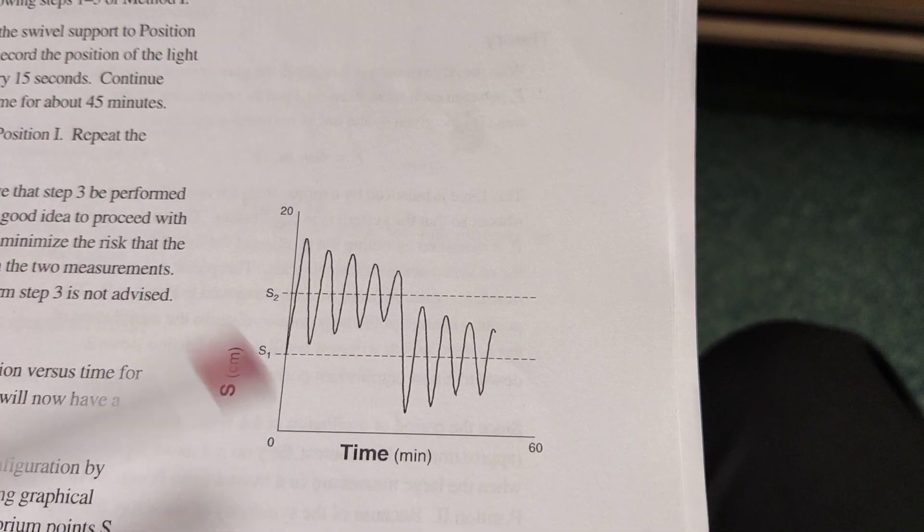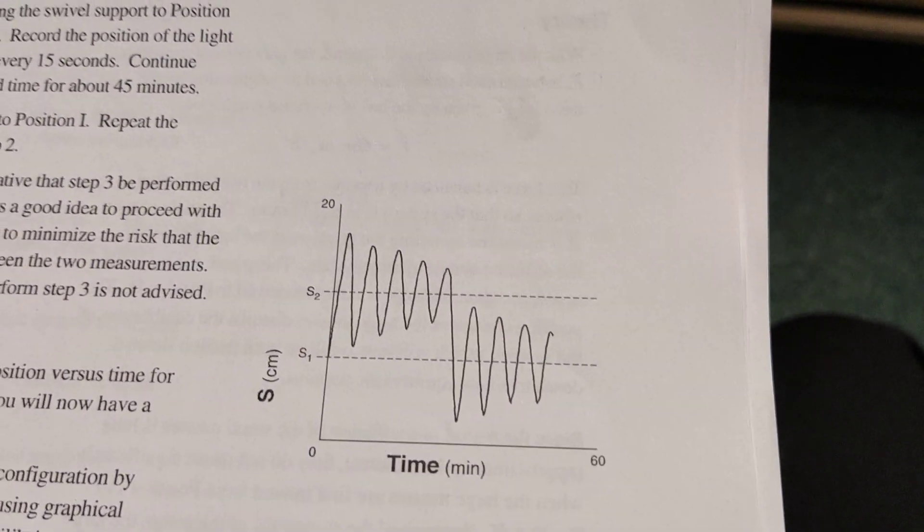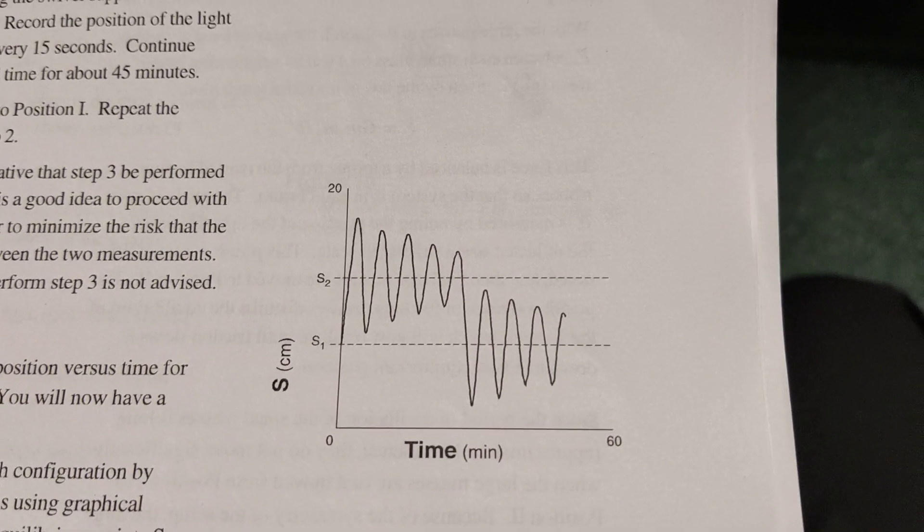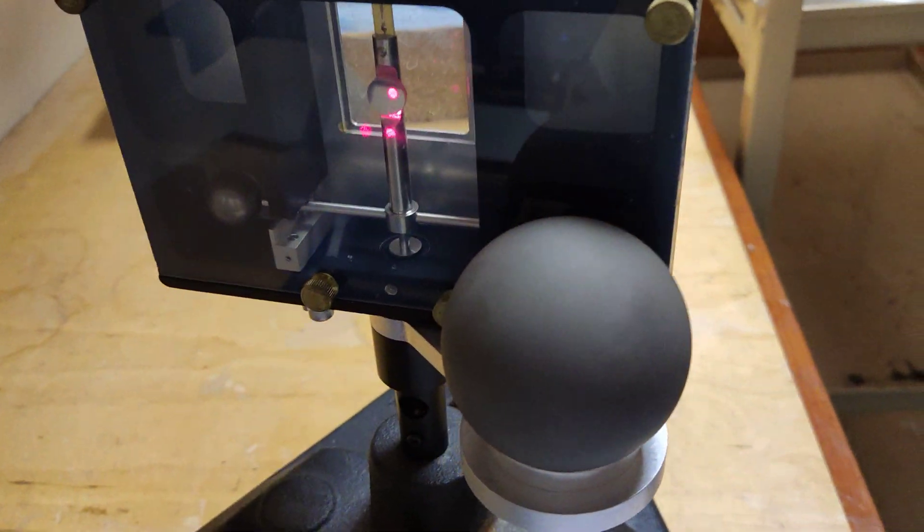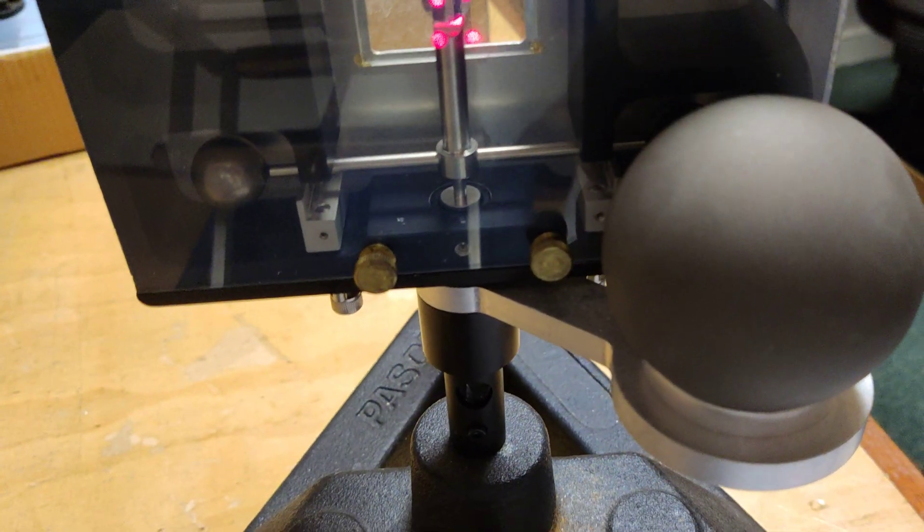And by working out a whole load of stuff, effectively it's pretty complex, you can work out G. So there you go, that's PASCO's gravitational torsion balance, just like Cavendish's experiment really. Very cool.